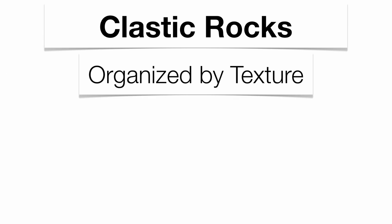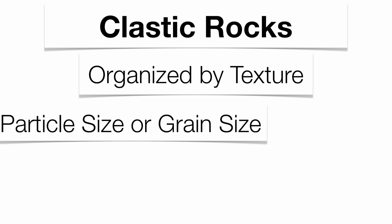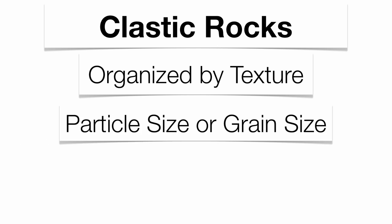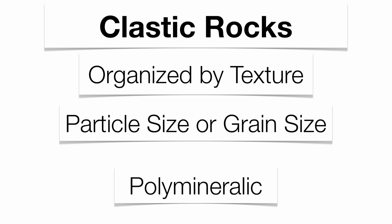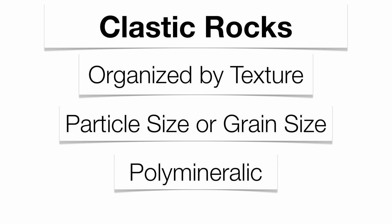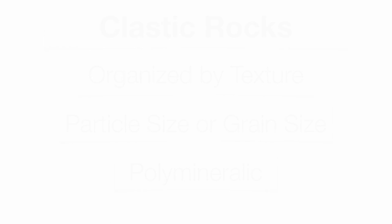Clastic rocks are organized by texture. We have five rocks: conglomerate, breccia, sandstone, siltstone, and shale. They're all organized by the size of the particle that gets glued together. All five of those rocks are going to be polymineralic, which means they're going to be made up of many minerals.